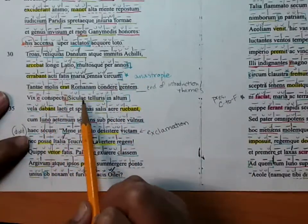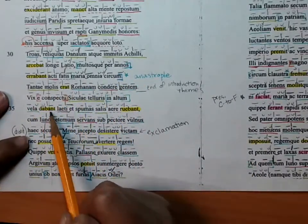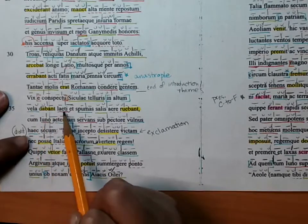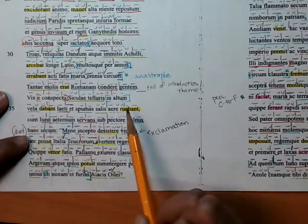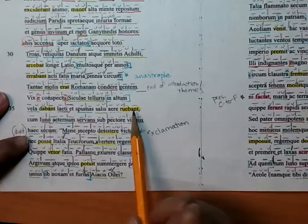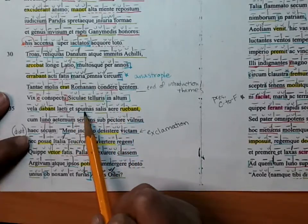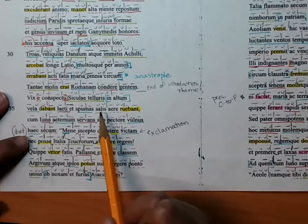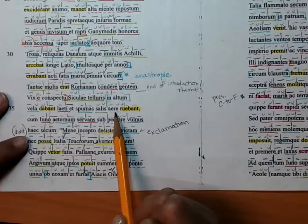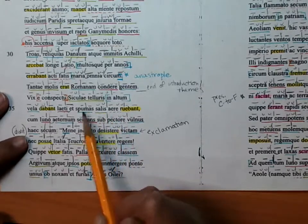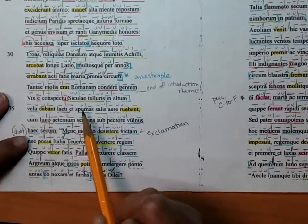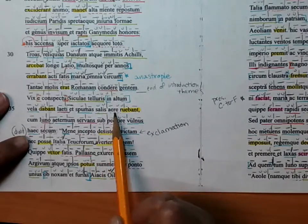Barely from the sight of the Sicilian land, they were giving their sails, happy, were giving their sails into the deep, and they were cutting the foam of the salt by means of bronze. This is a poetic device. What it means is they were cutting the foam of the sea by means of the ship.